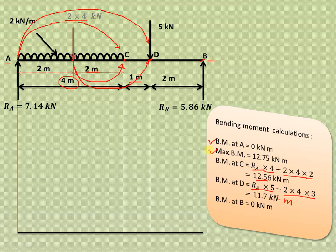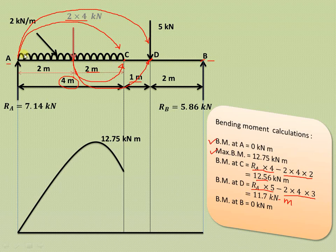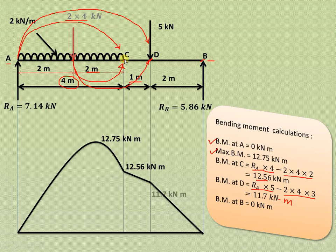So bending moment at A is zero, the maximum bending moment is 12.75 kNm at x = 3.57 m from A, at point C it is 12.56 kNm, at point D it is 11.7 kNm, and at point B it is zero. Since the UDL produces a second-order (x²) term in the bending moment equation, the curve is parabolic wherever the UDL acts. This completes the bending moment diagram.